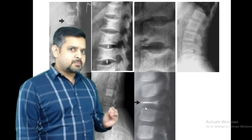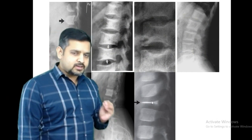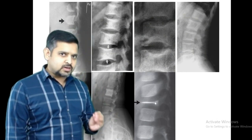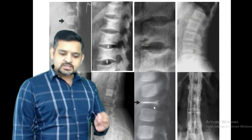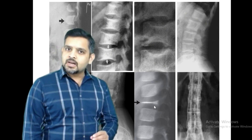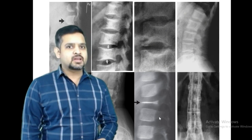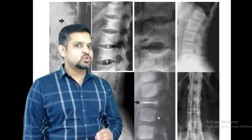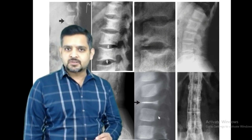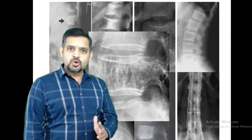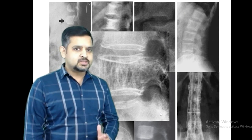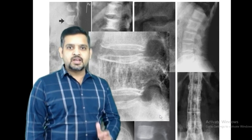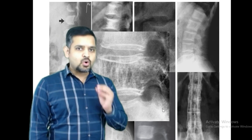This is vertebra plana in eosinophilic granuloma, and this is a typical bamboo spine seen in ankylosing spondylitis. This is a corduroy appearance seen in vertebral hemangioma.